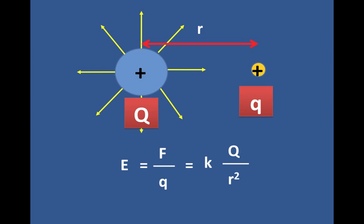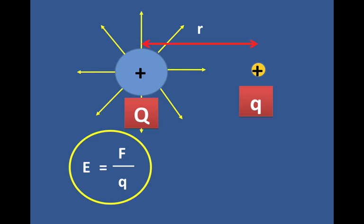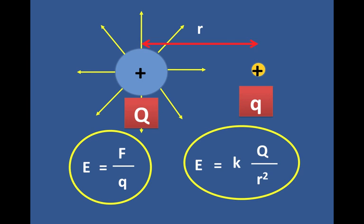Let me summarize. We have the definition of the electric field: F over Q, newtons per coulomb, and it describes something about a point at a distance from a large charge Q. The value of the electric field due to a large charge Q at any distance R is KQ over R squared.